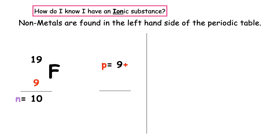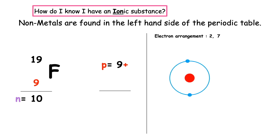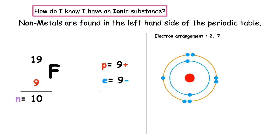The electron arrangement for fluorine is 2, 7. We can see that in the first energy level we've got 2 electrons, and in the second energy level we've got 7 electrons. That's a total of 9 electrons. 9 positive plus 9 negative equals 0, so we know that it has a 0 charge and is therefore an atom.